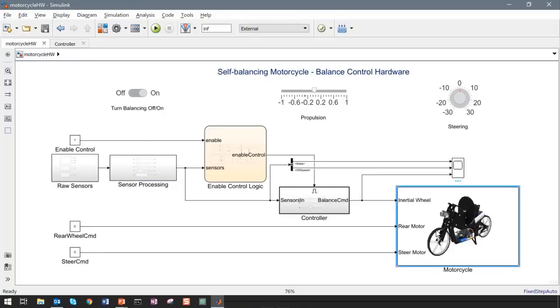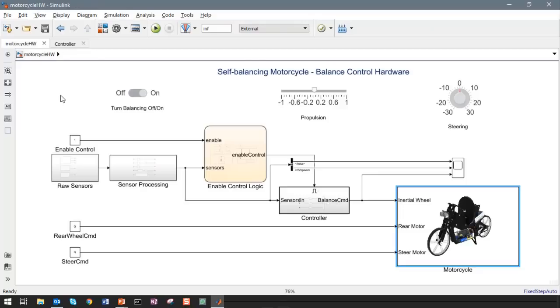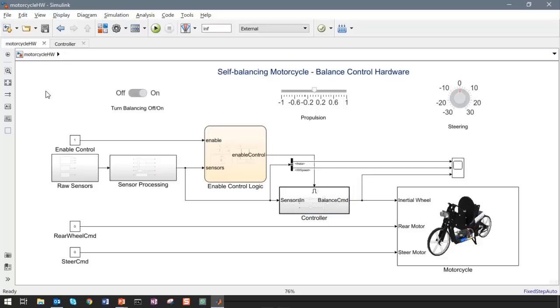Next, let's look at the motorcycle subsystem in the hardware model. Note that the motorcycle subsystem in the hardware model is different than the one in the simulation model. In this hardware model, we use blocks to send control commands to the motors instead of using a virtual representation of the motorcycle. Our intention now is to communicate with the actual hardware. Now, let's take a look at the controller. The controller subsystem is the same as the one we used in the simulation model. So this is where we are going to test the controller we tuned in the simulation model on hardware. Note that simulation may not always exactly match the hardware behavior, so some tuning may be necessary for your controller on the actual hardware.